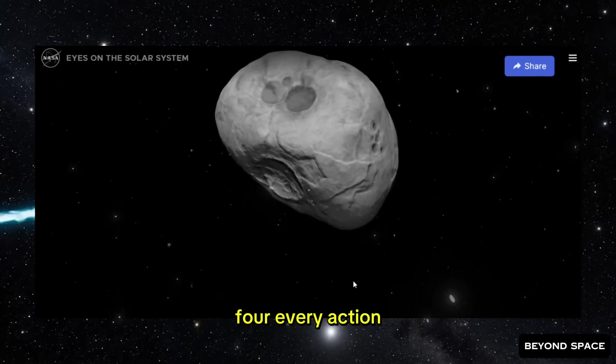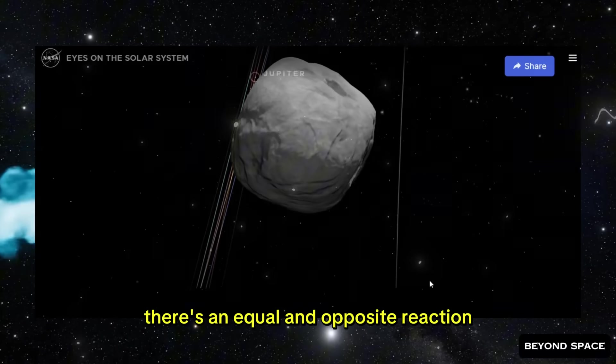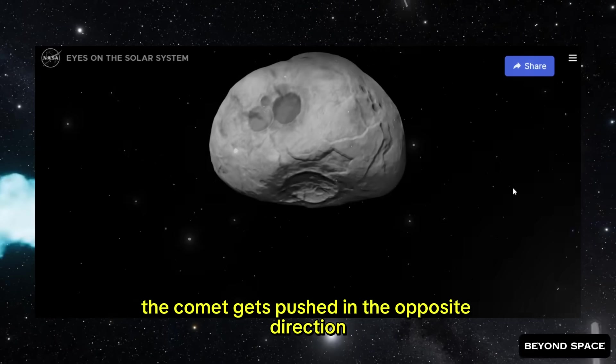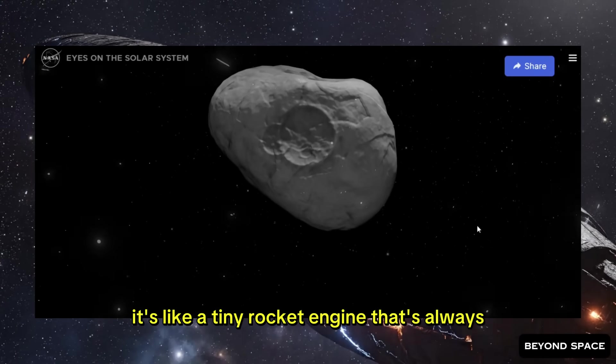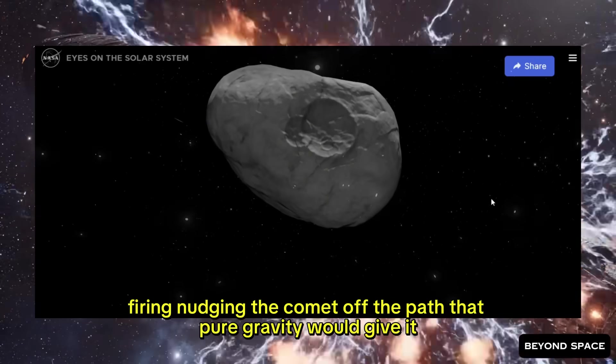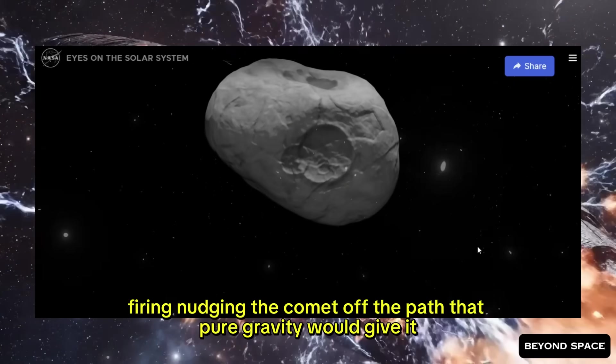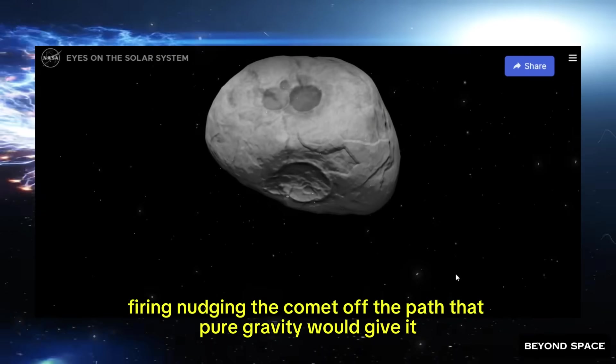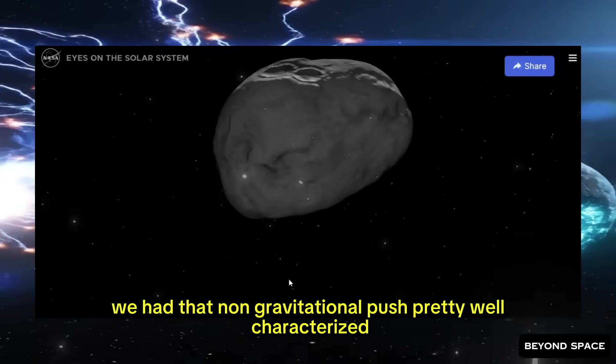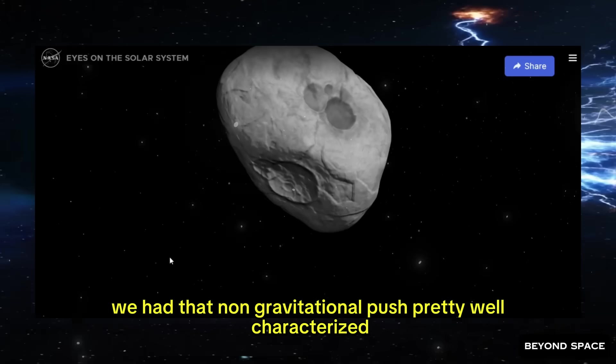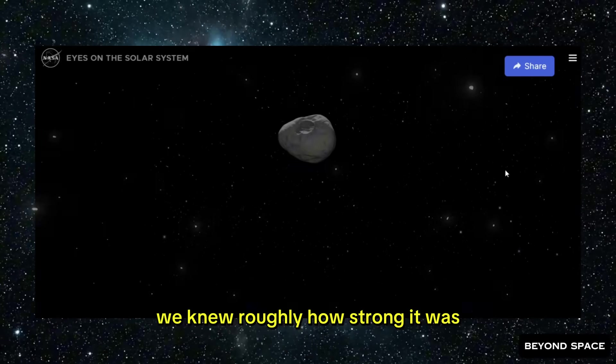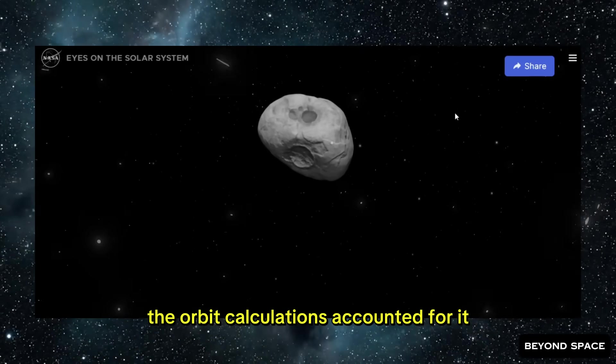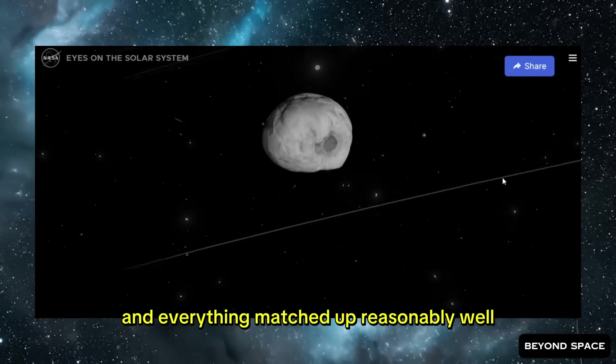But 3i Atlas isn't a dead rock. It's an active comet, which means it's constantly venting gas and dust from its surface. And when that material shoots off in one direction, Newton's third law kicks in. For every action, there's an equal and opposite reaction. The comet gets pushed in the opposite direction. We call that a non-gravitational force. It's like a tiny rocket engine that's always firing, nudging the comet off the path that pure gravity would give it.